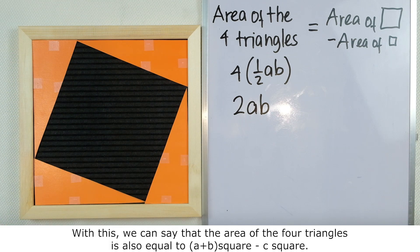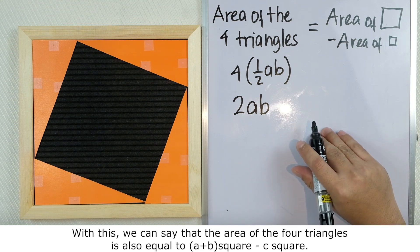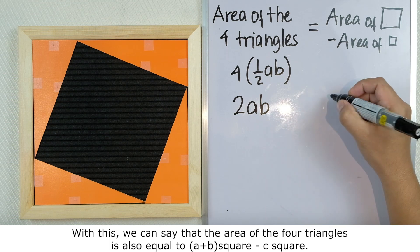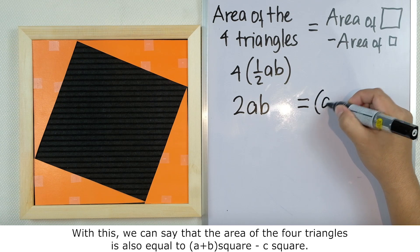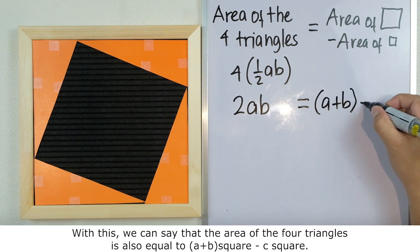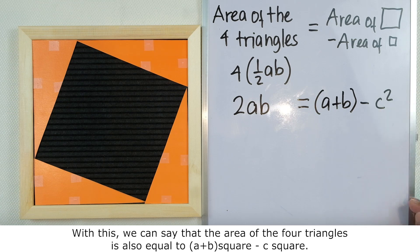With this, we can say that the area of the four triangles is also equal to (a+b)² - c².